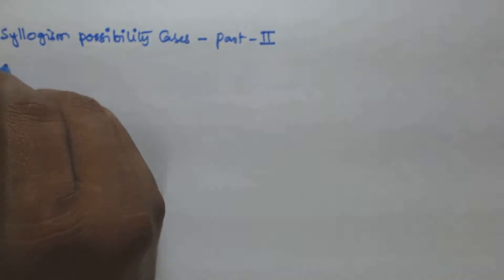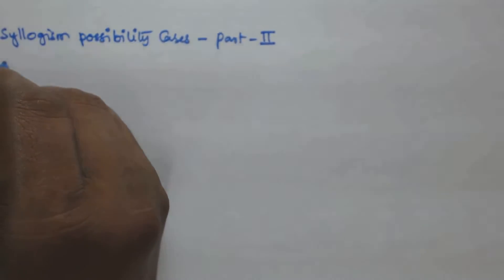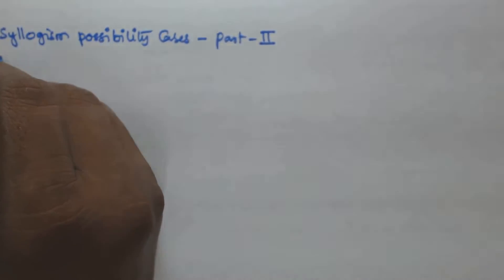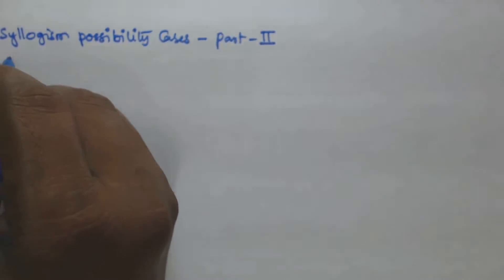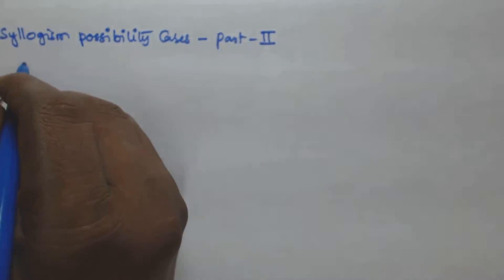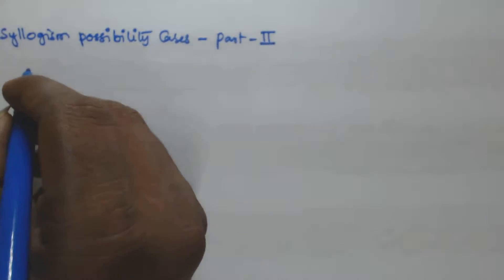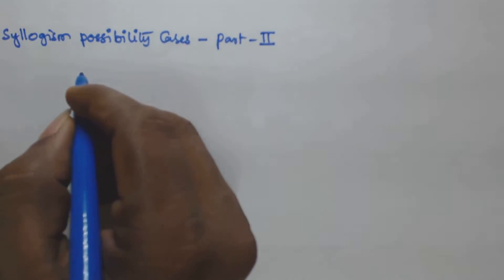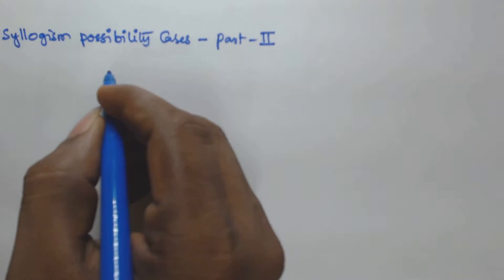Hello friends, welcome to Score More Aptitude channel. In the previous video we have seen the derivation of the possibility cases if the given statements are in the form of 'all a r b' and 'some a r b'. In this video I am also going to show you the derivation of some possibility cases.